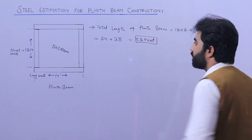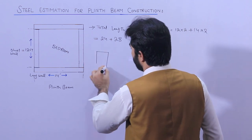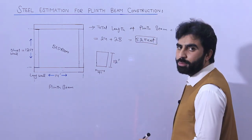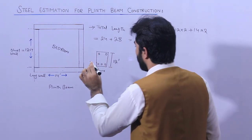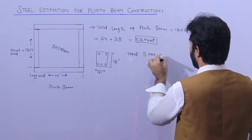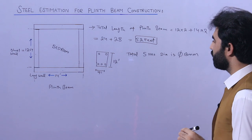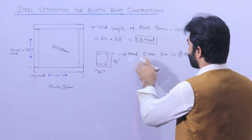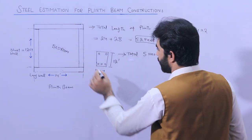Now let me guide you for the section size of this plinth beam. The size of the plinth beam is 9 inches by 12 inches. We are using five numbers of steel rods — three at the bottom and two at the top — so total five numbers, and the diameter is 12 millimeters. This is very important to know.